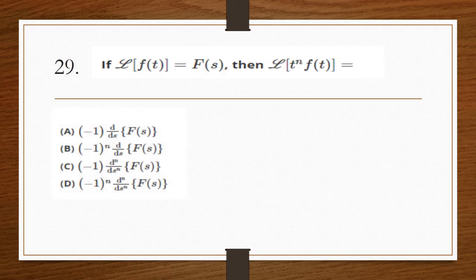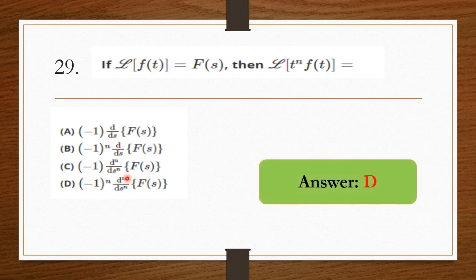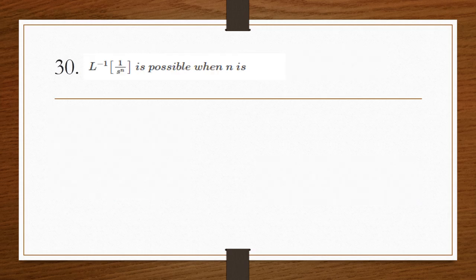If the Laplace transform of f(t) is F(s), then the Laplace transform of t^n · f(t) — using the differentiation property, the answer is option D: (−1)^n · d^n/ds^n [F(s)].